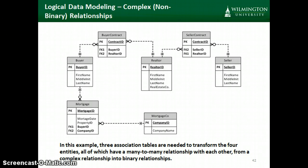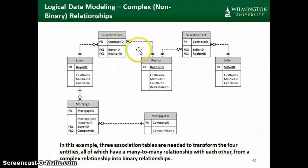So if we ever have a relationship that involves more than two entities, we're going to have to break up that relationship and deal with the entities two at a time. In the example that we're looking at, it's particularly complicated because all of our relationships between entities are many-to-many relationships. So if we find ourselves in that situation, we have to create an association entity for each pair of entities in a relationship.